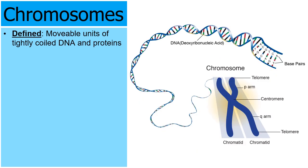Chromosomes are movable units of tightly coiled DNA and proteins. When you look at the picture, you can see a double helix DNA molecule coiling up into this blue X-shaped object labeled a chromosome. This is a chromosome — a movable unit of DNA and proteins.